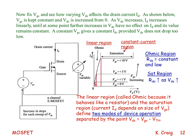The region of linear behavior is called the ohmic region, where the drain-source resistance is constant and very low. The constant current region is called the saturation region, where the drain-source resistance increases as the drain-source voltage increases. By repeating this experiment with increasing gate-source voltage in steps, we produce a family of curves. These define the two modes of device operation, separated by the point where the drain-source voltage equals the gate-source voltage minus the threshold voltage.